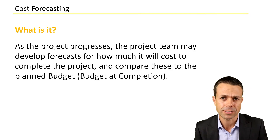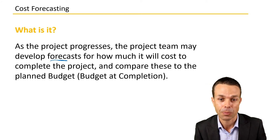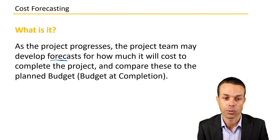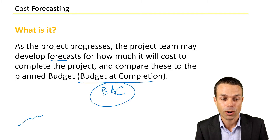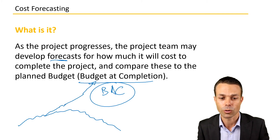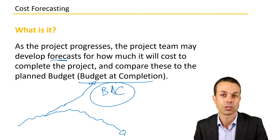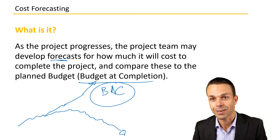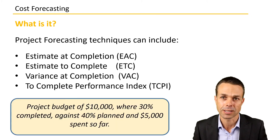So what is cost forecasting? As the project progresses, the project team may need to develop forecasts for how much it will cost to complete the project and compare these to the planned budget — the budget at completion, the BAC. Your project as it's going along may be on track, off track, costs may be blowing out, or the value you're delivering is changing. Sometimes things just don't go to plan, so we have to figure out how much it's going to cost us to finish all of the remaining work. That's where cost forecasting comes into play.